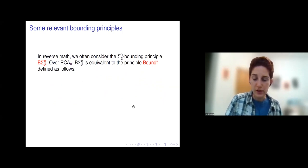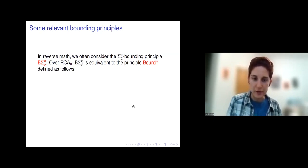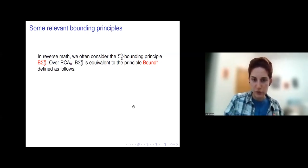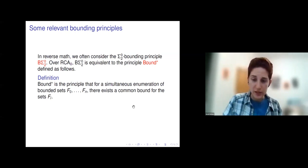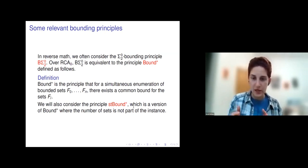Let's look at some examples of how this helps us see the differences between principles. In reverse math, we often consider the Σ⁰₂ bounding principle BΣ⁰₂, which over RCA₀ we can state as the Π¹₂ problem Bound*. Bound* is the principle that for a simultaneous enumeration of bounded sets F₀ through Fₙ, there exists a common bound for the sets Fᵢ. We can also think of Strong Bound*, which is a version where the number of sets is not part of the instance.